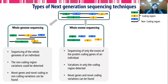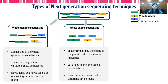Another variation is whole exome sequencing, wherein only the exonic regions or specific regions of the whole genome are sequenced — that is, the protein-coding exons of genes. Variations in the coding region can be detected, but variations in non-coding regions are majorly missed in case of whole exome sequencing. Novel coding variations can be found, but novel non-coding variations can be missed out.